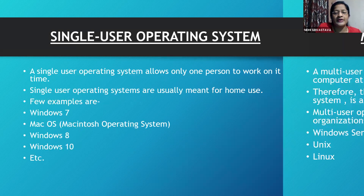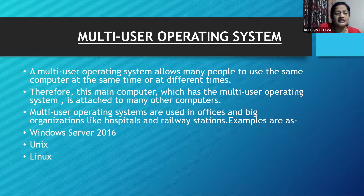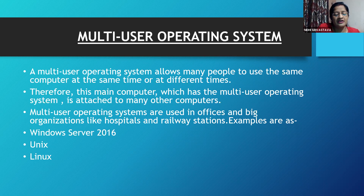A multi-user operating system allows many people to use the same computer at the same time or at different times. Therefore, the main computer which has the multi-user operating system is attached to many other computers. Multi-user operating systems are used in offices and big organizations like hospitals and railway stations. Examples are Windows Server 2016, Unix, Linux, etc.